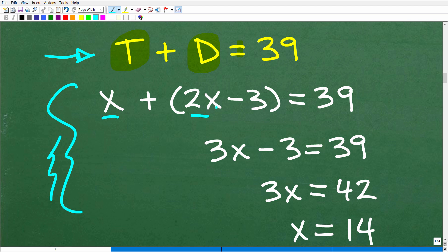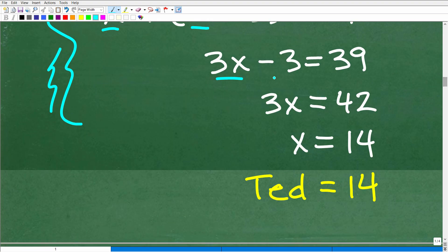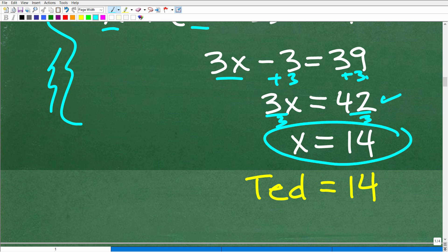So we have X and 2X. We want to combine like terms. That's going to be 3X minus 3. So now we're going to go ahead and add 3 to both sides of the equation. So I'm going to have 3X is equal to 39 plus 3, which is 42. So to solve for X, all I need to do is divide both sides of the equation by 3. So 42 divided by 3 is 14. So X is equal to 14.